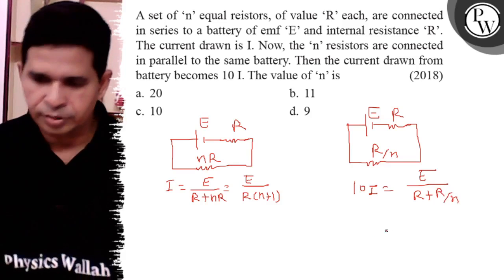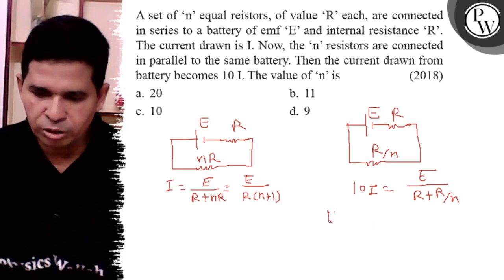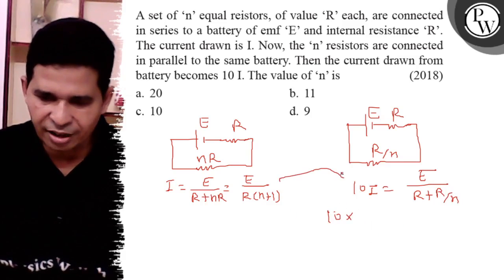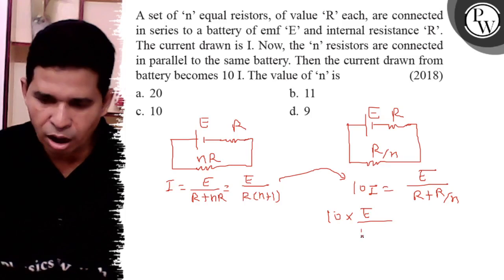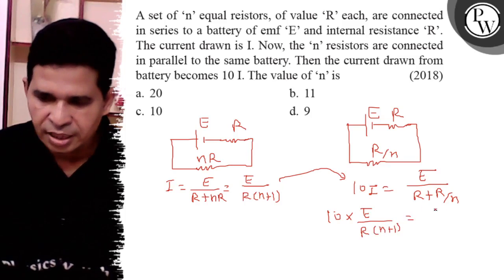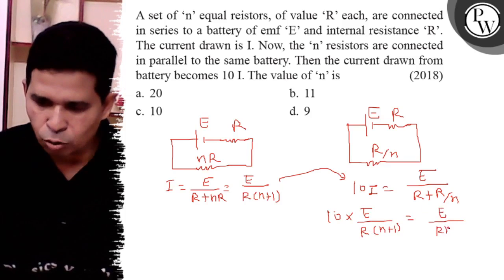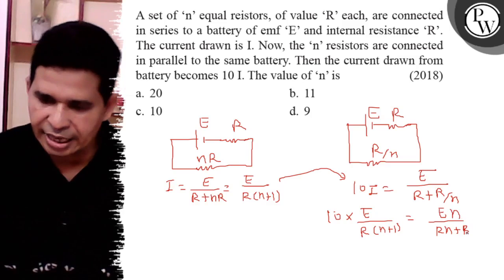So put the value of I from here. So it is E upon R times N plus 1 equals 10 times E. Taking LCM, so R times N plus R and it is N times E.